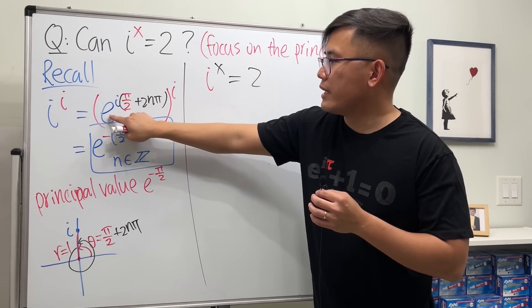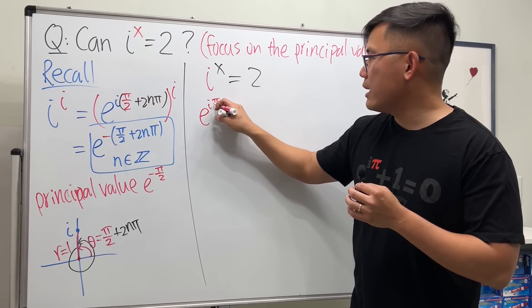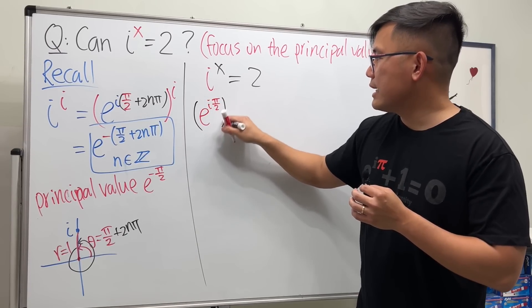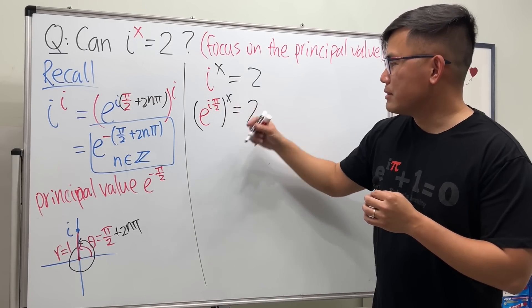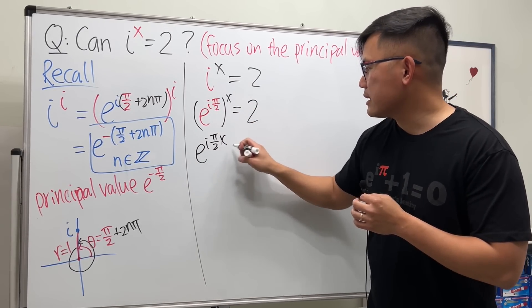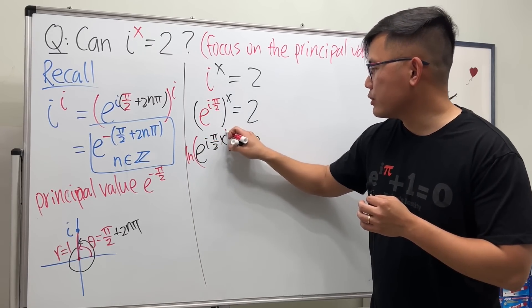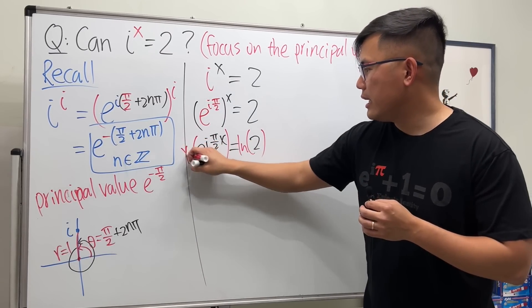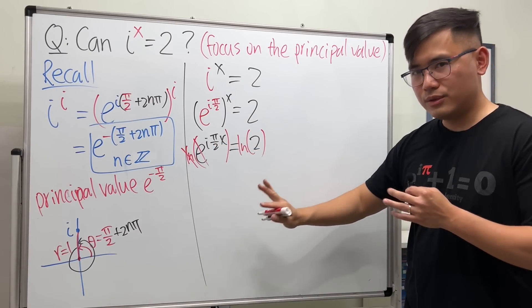Of course we can rewrite the i as this, but because we just want to focus on the principal value, we don't want to look at that part. So just write it as e to the iπ over 2, and then raise that to the x power, and that's equal to 2. Now this times that, we have e to the iπ over 2x equals 2. Then we can just take the natural log on both sides.